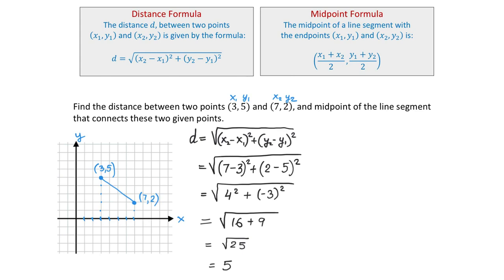Now we will find the coordinates of the midpoint. The midpoint is a point that divides the line segment exactly into two equal parts. On the graph the midpoint will be here and we will look for the x and y coordinates of this point. To find the coordinates we use the formulas: x1 plus x2 divided by 2, and y1 plus y2 divided by 2.